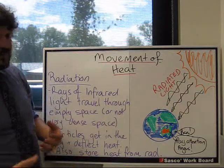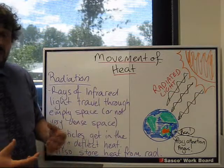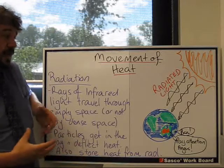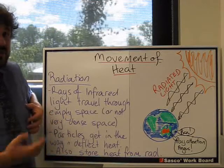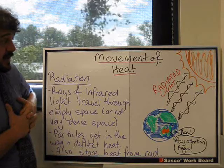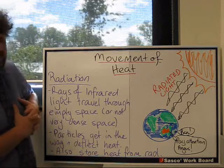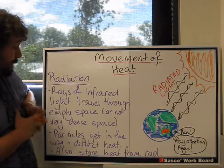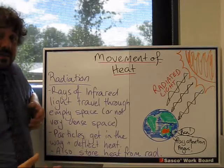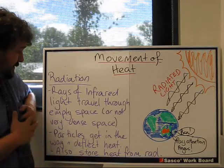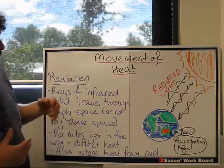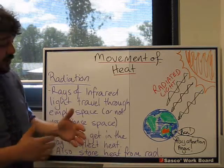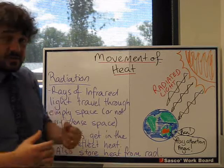This way heat can travel through empty space, through a vacuum, or space where there aren't as many particles. It can radiate through a gas. In this case it's radiated infrared light—that's what heat is, infrared light. Particles do get in the way and can either deflect heat or store heat. Particles can interrupt radiation by deflecting and scattering it, or by storing the heat.